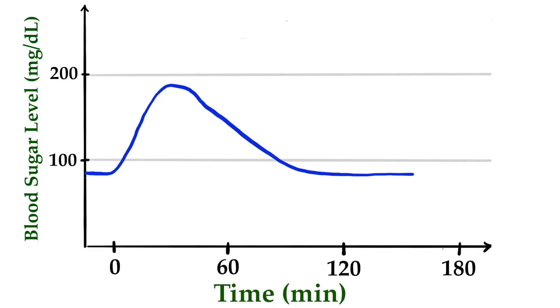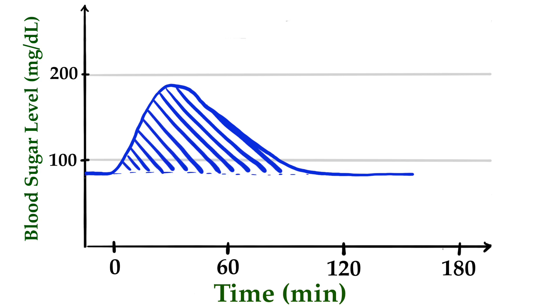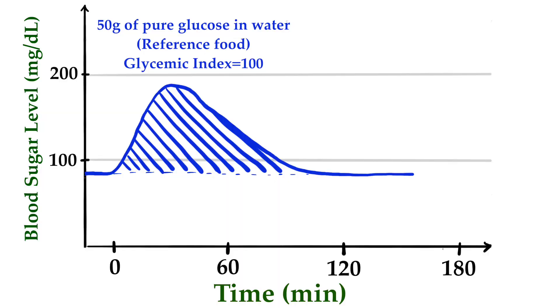Investigators then calculate the area under the glucose curve above the baseline glucose concentration — we also call this the incremental area under the curve. This is then repeated two more times with the glucose beverage, and researchers average the three areas under the curve. That average is then set to 100, because by convention, 50 grams of pure glucose has a glycemic index of 100.